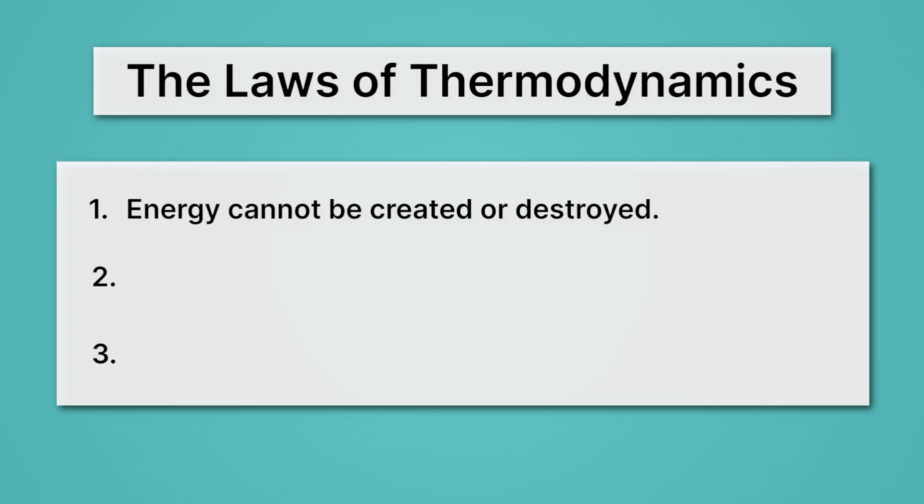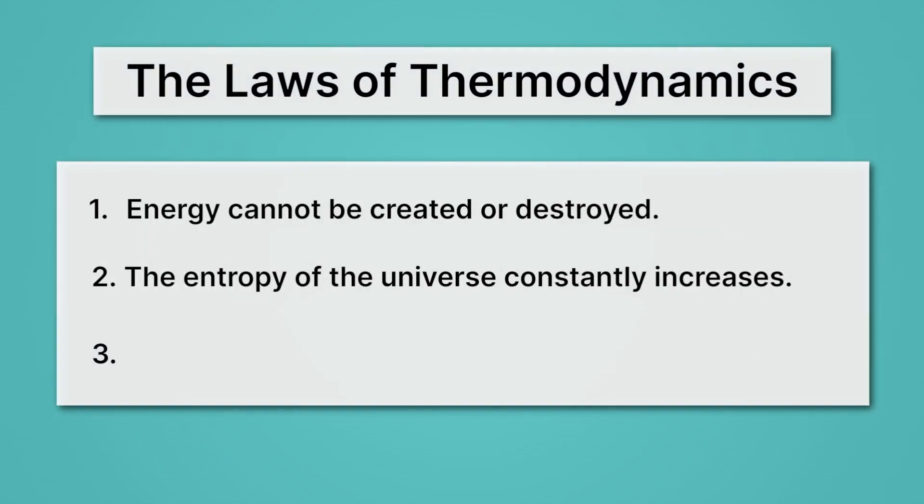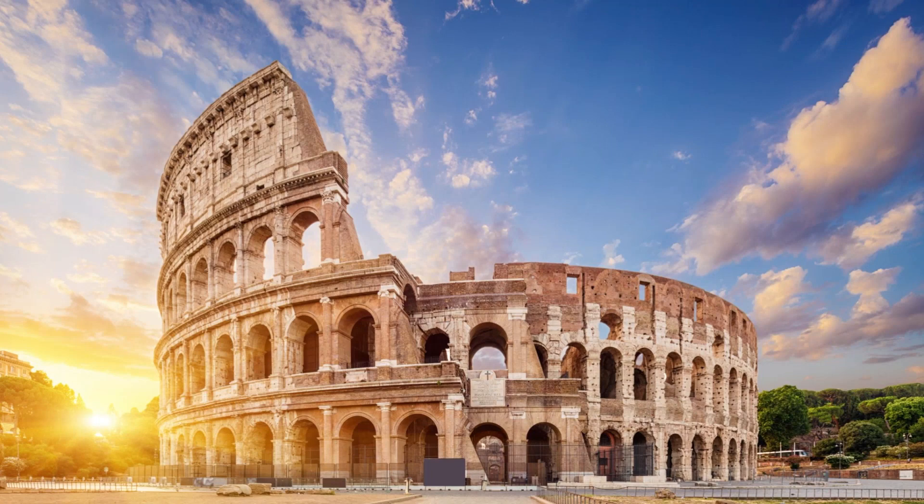The second law of thermodynamics says that the disorder of the universe constantly increases. But in physics, we have a fancy word for disorder. We call it entropy. Entropy is just a measure of disorder. So with that in mind, we'll often restate the second law of thermodynamics as the entropy of the universe constantly increases. What do we mean? Well, take for example, the Colosseum. You'll notice that it's falling apart. It's actually in really good shape for being as old as it is, but it's falling apart. And that's what ruins always do. Stuff falls apart over time, unless we work really hard to keep it running. And that's just the second law of thermodynamics in action. It's going from order, a nice structure, to disorder, a falling apart one.